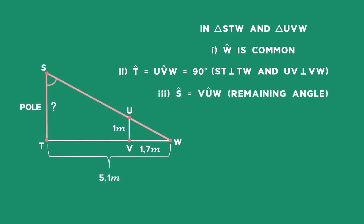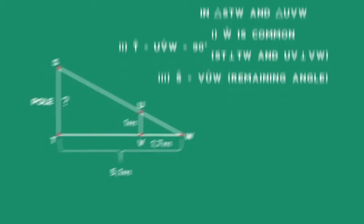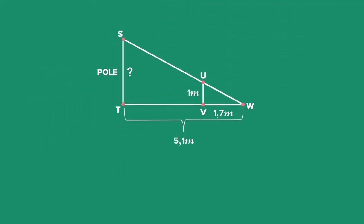Angle S will be equal to angle U using the sum of angles of a triangle, since these are the remaining angles of the triangle. Therefore, triangle STW is similar to triangle UVW.